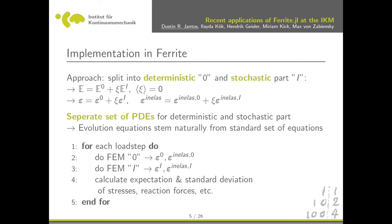Our approach tries to achieve both: a physically correct model that is very fast — not due to code optimization but due to the theory itself. The basic idea is a mathematical trick where we split the deterministic part, determined by index zero, and the stochastic part with index i, into two different sets of partial differential equations, which leads to two different finite element approaches.